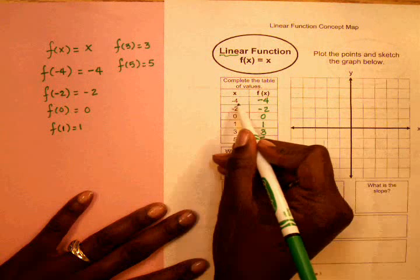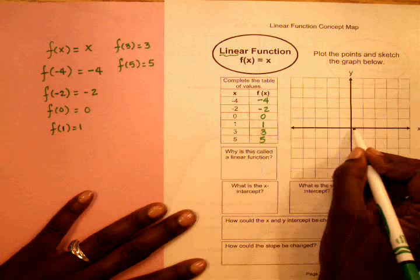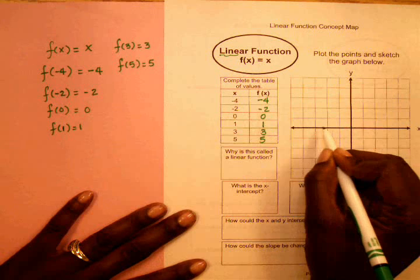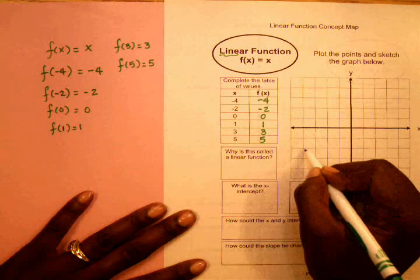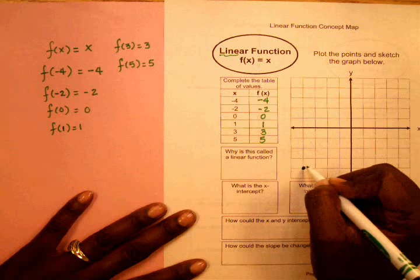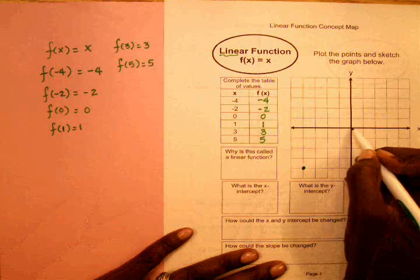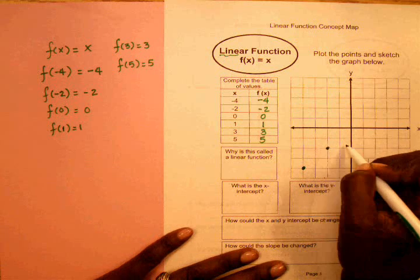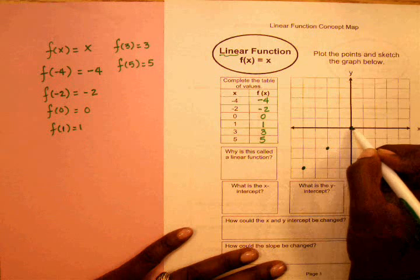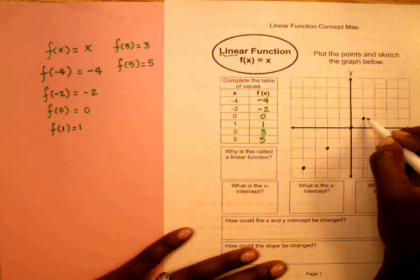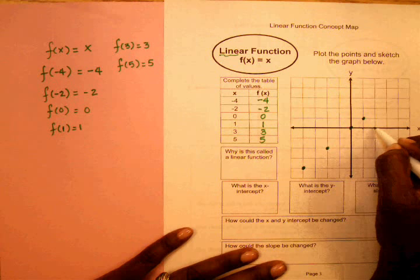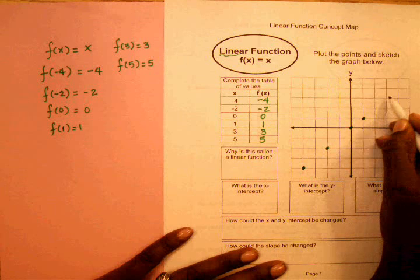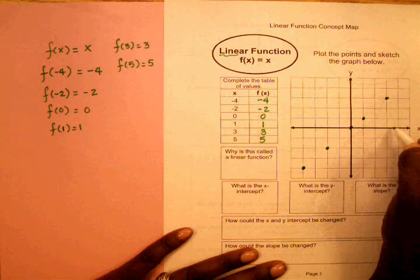So my first coordinate is negative 4, negative 4. My next coordinate: negative 2, negative 2. Then 0, 0. Then 1, 1. Then 3, 3. And 5, 5.